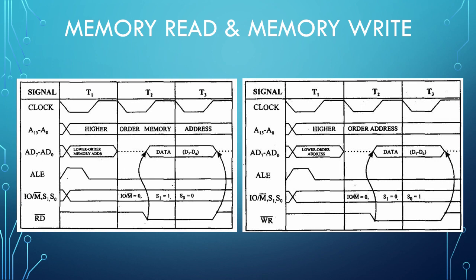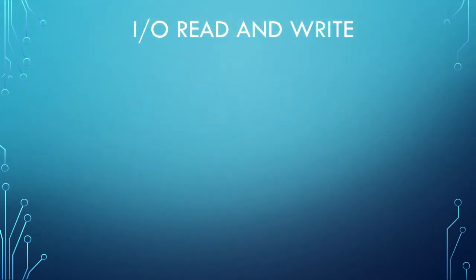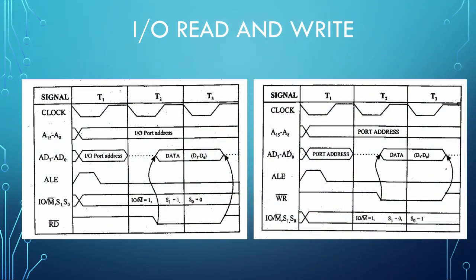In case of read bar, data is read by the processor. And in case of write bar, data is given by the processor. S1 and S0 in case of memory read were S0=0, S1=1; in the case of memory write, S1 is 0 and S0 is 1. Coming to IO read and IO write cycles — they also require 3 T states. The difference is in the IOM bar signal: in case of IO read and IO write it is an IO related operation, so IOM bar is high. Rest of the signals are exactly the same — for IO read they are the same as memory read, and for IO write they are the same as memory write.